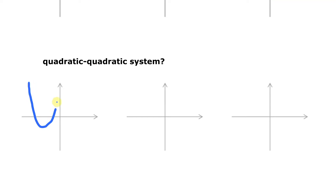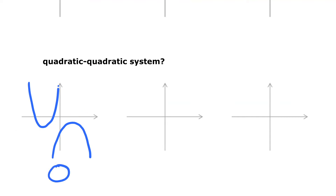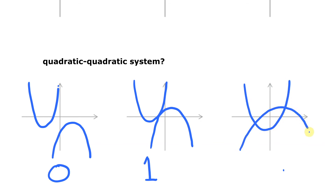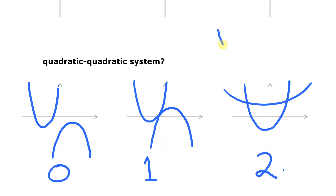For a quadratic-quadratic system: we have two parabolas that do not intersect — whether they open in opposite or the same direction — giving zero solutions; two parabolas that touch at a single point giving one solution; two parabolas that intersect at two points giving two solutions; and the special case where the two parabolas are actually the same one on top of each other, giving infinitely many solutions.